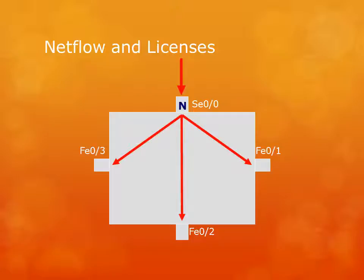If we have ingress NetFlow enabled on Serial 00, as a packet comes into that interface, the route cache entry is created — regardless of whether the packet is going to Fast Ethernet 1, 2, or 3. We get information in the route cache detailing the source interface (where the packet came in) and the destination interface (where the packet is being routed out). By enabling NetFlow on Serial 00, we get a complete picture of what's coming into that interface, plus partial pictures of what's going out of Fast Ethernet 01, 02, and 03.